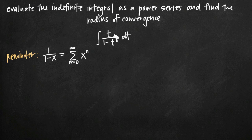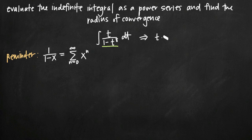There are just a couple of differences. One thing we can do to make our function more similar to this well-known power series is to factor out t from the numerator. If we look at t divided by 1 minus t to the 8th and ignore the integral and the dt for a second, we can factor out a t and we're left with t times 1 over 1 minus t to the 8th power.